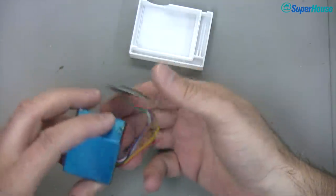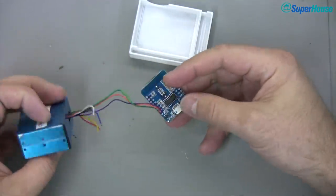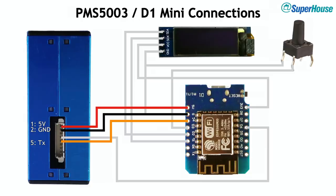It's the PMS5003, the D1 Mini and we've got these connections. Until now the only connections we've needed are 5 volts and ground to power the sensor and the TX line from the sensor going to D4 on the D1 Mini. But to do some more advanced things like put the PMS to sleep in between readings and make sure the sensor will last as long as possible, we also need to add a connection from D6 on the D1 Mini to the RX pin on the PMS. That way we can send it commands like go to sleep or wake up.